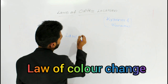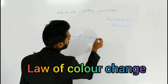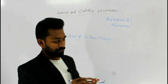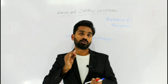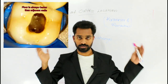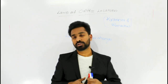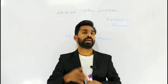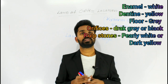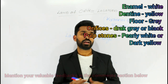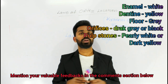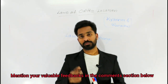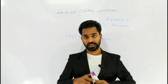The law of color change states that the floor of the pulp chamber is always darker when compared to the adjacent walls. As mentioned in Grossman, the different colors of dental structures are: enamel is white, dentine is yellow, the floor of the pulp chamber is gray, the orifice is dark gray or black in color, and pulp stones are pearly white or dark yellow in color.